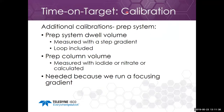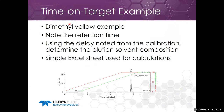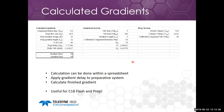Time on target requires one more calibration step. Since we are running a focused gradient, we need to measure the dwell and column volume to measure the gradient delay on that system. Dwell volume is measured with a step gradient with the column not installed, and that includes any loops for loading the sample. Prep column volume you can measure with an iodide or nitrate salt, or you can calculate it. As an example, we have dimethyl yellow: we note the retention time and, using the delay from the calibration, determine the elution solvent composition.